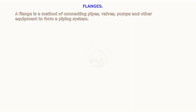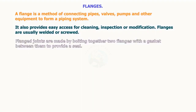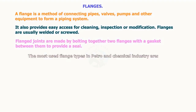A flange is a method of connecting pipes, valves, pumps, and other equipment to form a piping system. It also provides easy access for cleaning, inspection, or modification. Flanges are usually welded or screwed. Flange joints are made by bolting together two flanges with a gasket between them to provide a seal. The most used flange types in the petro and chemical industry are listed as follows.